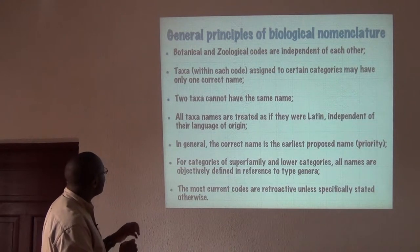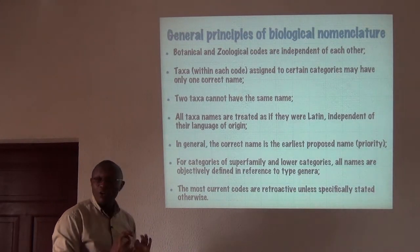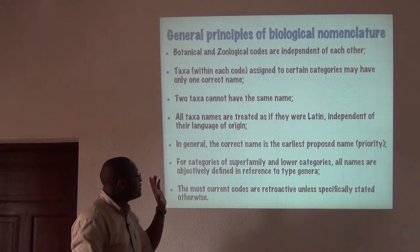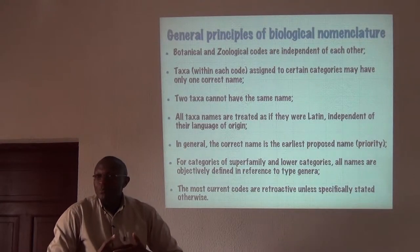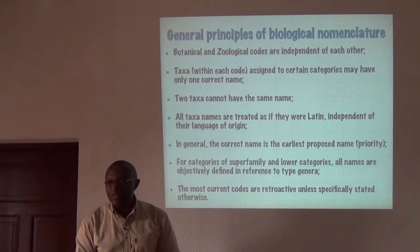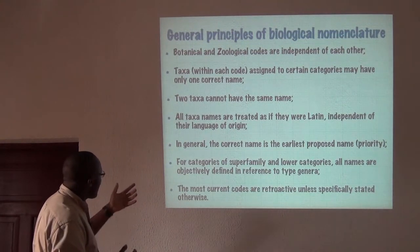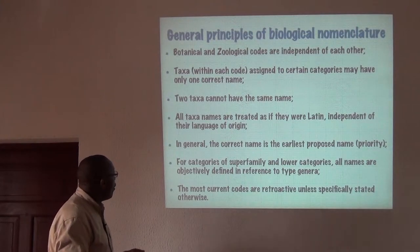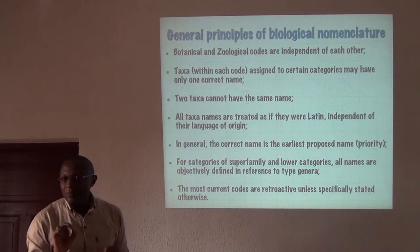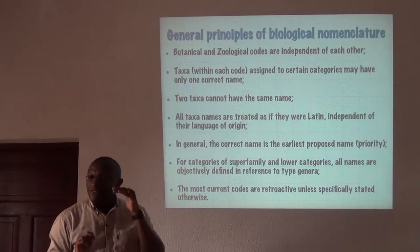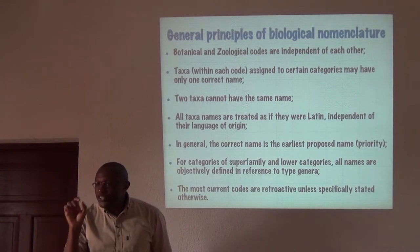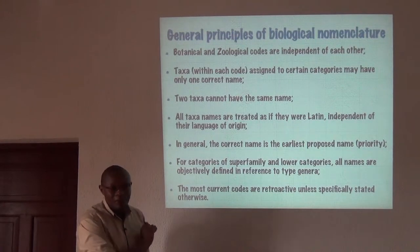All taxon names are treated as if they were Latin, independent of their language of origin. In general, the correct name is the earliest validly proposed name — this is the principle of priority, which we will return to. For categories of superfamily and lower, all names are objectively defined in reference to the type genus, so to name a family you must have within it a genus name that serves as the root for the family name.